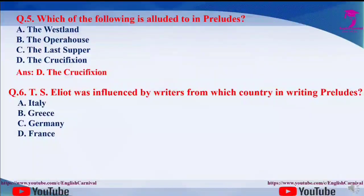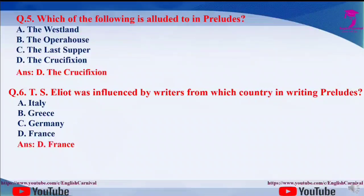Question number six: T.S. Eliot was influenced by writers from which country in writing Preludes? Options are A. Italy, B. Greece, C. Germany, and D. France. The correct answer of this sixth question is D, that is France.